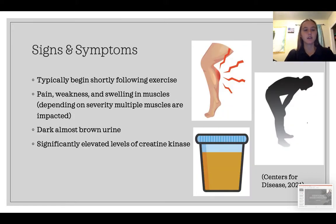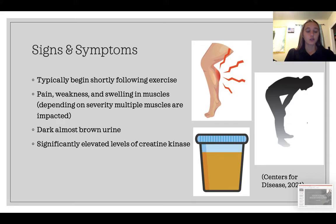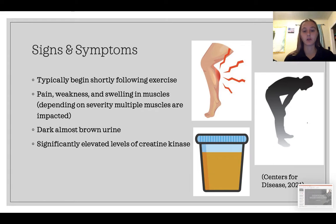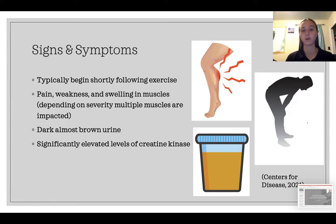Some signs and symptoms — these are going to happen following physical activity or exercise, because we are dealing with exertional rhabdomyolysis. You're going to see pain, swelling, and weakness in the muscles. Depending on the severity, in the later stages they are going to have muscle cramps in a lot of places, be very weak, possibly hunched over. Their urine is going to be dark, and they're going to have significantly elevated levels of creatine kinase.